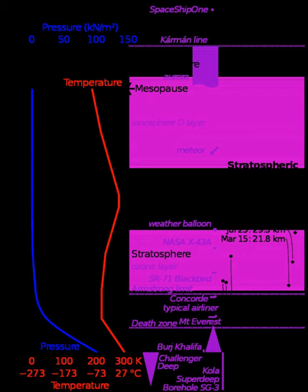The International Standard Atmosphere is an atmospheric model of how the pressure, temperature, density, and viscosity of the Earth's atmosphere change over a wide range of altitudes or elevations.